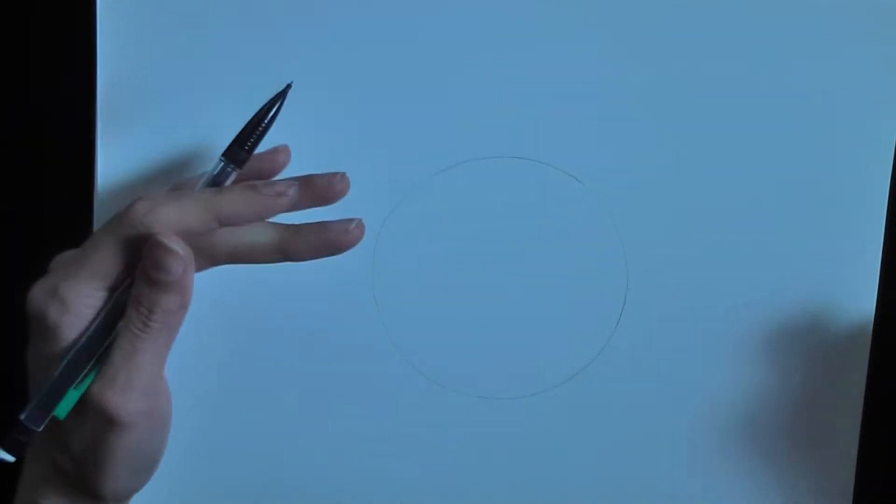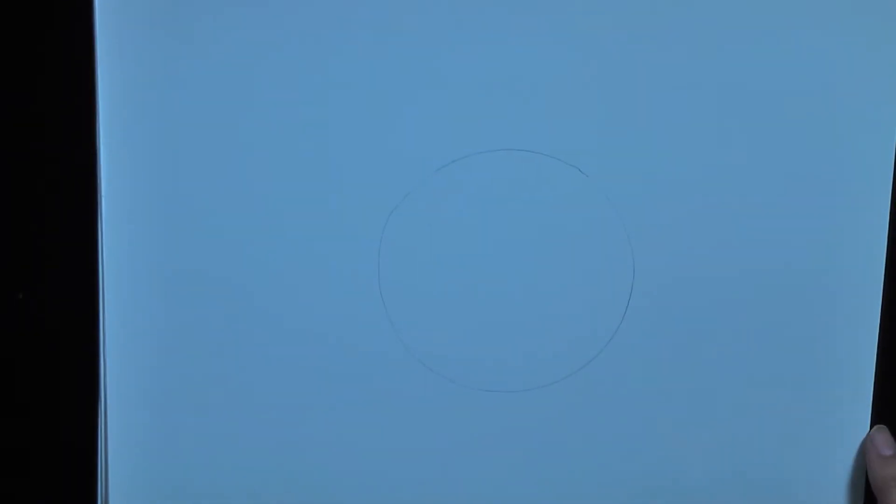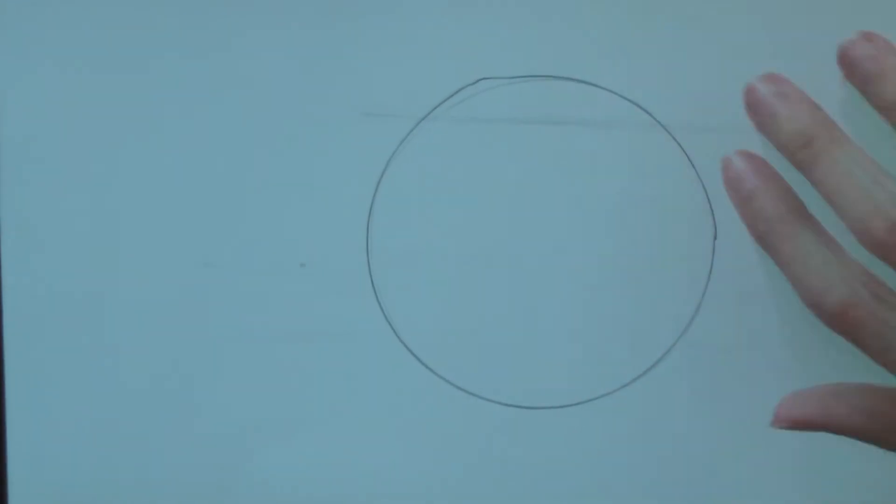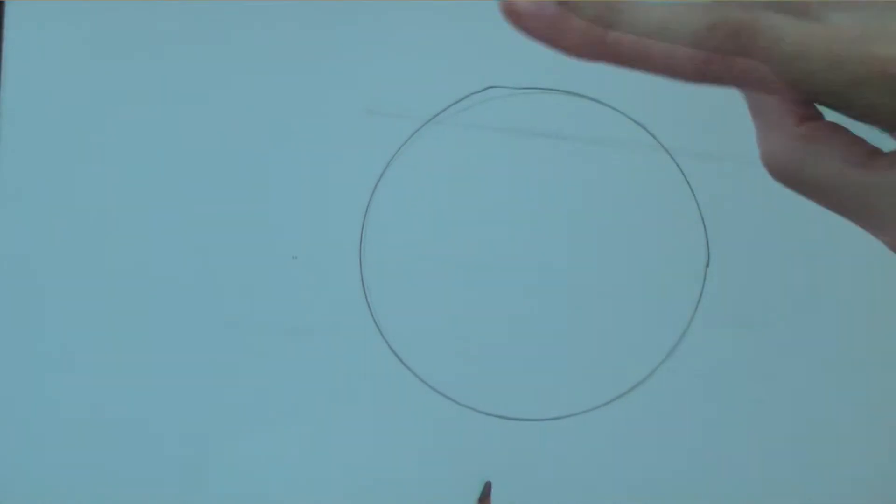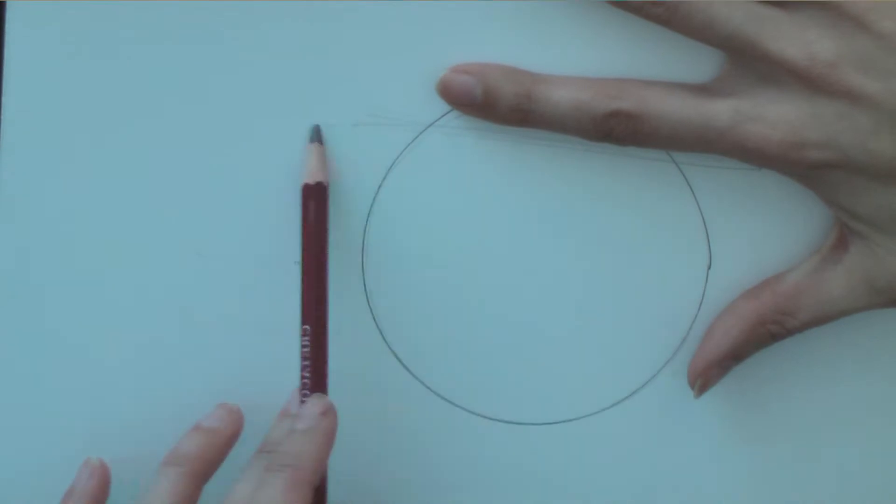Now that we have our circle, we're going to make a couple guidelines in order to make the rest of the drawing easier. Okay, so I'm going back over everything with a dark pencil so you guys can see it. So I did a half a finger's width from the top. I made a line.